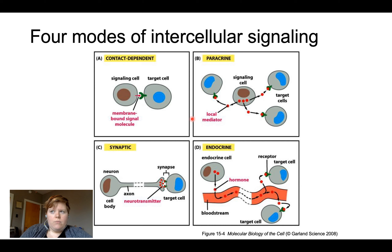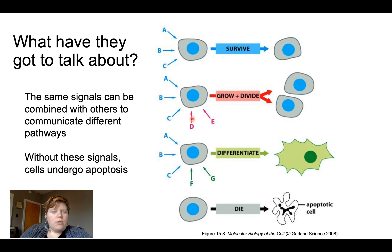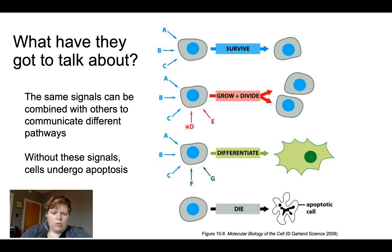What could cells possibly have to talk about? Cells are getting signal input all of the time. Looking at this diagram, a cell is getting signals A, B, and C, causing cascades — telling the cell to survive and persist. But those same signals combined with two different molecules can instead tell the cell to grow and divide. So the same survival signals combined with new inputs can trigger cell division.